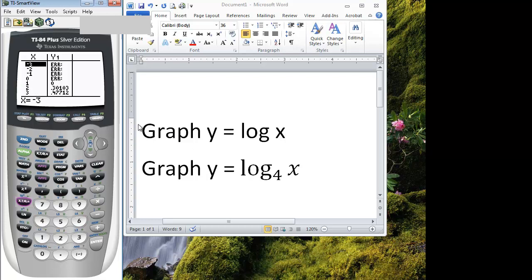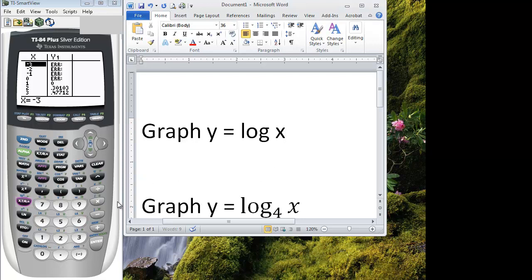But remember, we have a domain for this first graph that x has to be strictly greater than 0. The way you find your domain of a log is whatever your argument is, you set that value greater than 0. It can't be equal to 0. As you see, when it equals 0, there's an error.